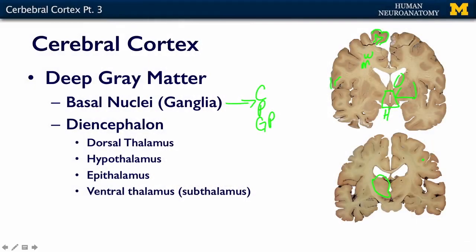But for here, I want you to remember that the cerebral cortex is on the outside, white matter deep to that, and then we have these deep gray structures, deep gray matter structures within.